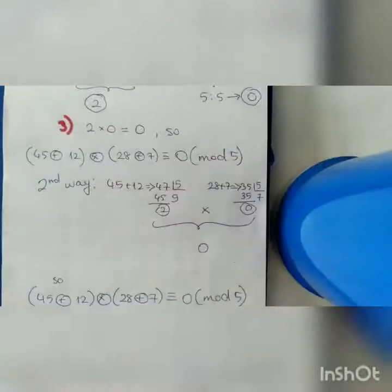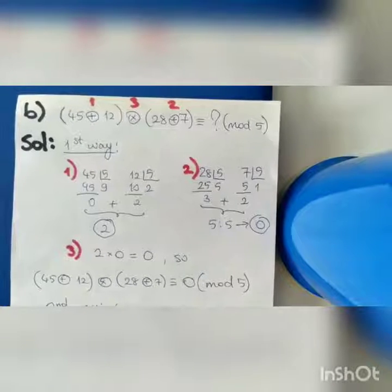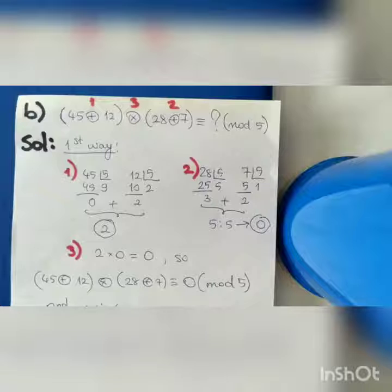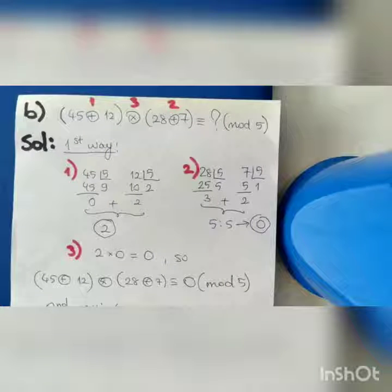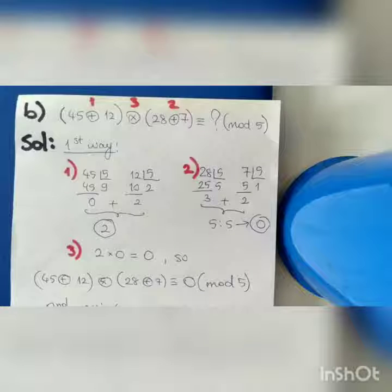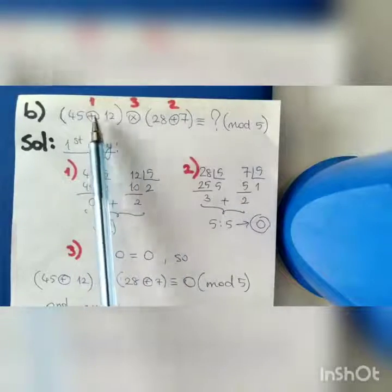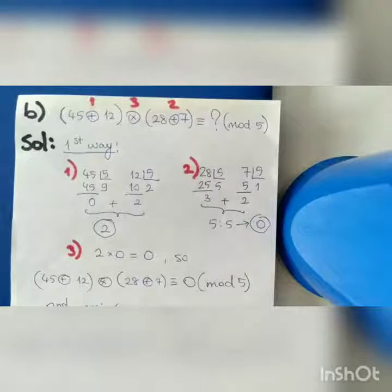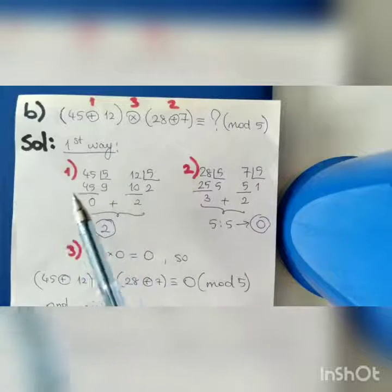Let's see another example — a mixed operation, because here we have both a plus sign and a multiplication sign. The expression is (45 plus 12) multiplied by (28 plus 7), which is equivalent to some number modulo 5. There are two ways to solve this. The first way has three steps: first braces, second braces, and then multiplication. By finding equivalent numbers of each addend, we can find the equivalent number of the sum.